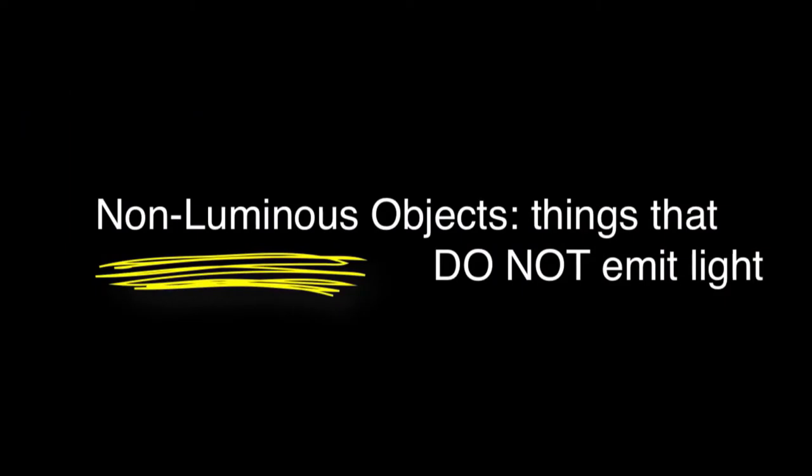Now, there are, of course, non-luminous objects. They do not emit light. Examples of non-luminous objects are the books and the bookcases behind me. We still see them if there is a nearby luminous object, a source of light. But turn that source of light off, and we can no longer detect the non-luminous objects.